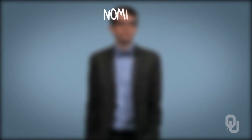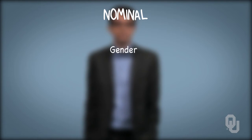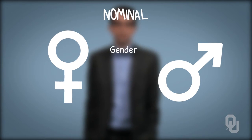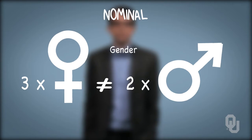The nominal scale generally measures categories or classifications. For example, gender is measured on a nominal scale, with two values: female and male. We can't perform arithmetic operations on these categories — three times female doesn't equal two times male. Even when the categories are numerical, we still can't perform arithmetic operations.